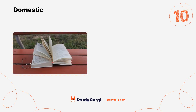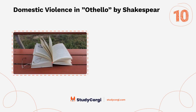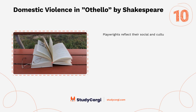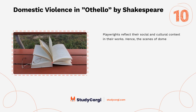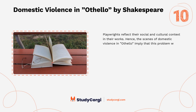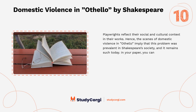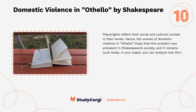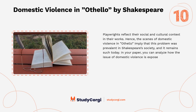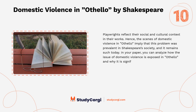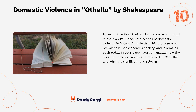Domestic violence in Othello by Shakespeare. Playwrights reflect their social and cultural context in their works; hence the scenes of domestic violence in Othello imply that this problem was prevalent in Shakespeare's society, and it remains so today. In your paper you can analyze how the issue of domestic violence is exposed in Othello and why it is significant and relevant to the modern world.